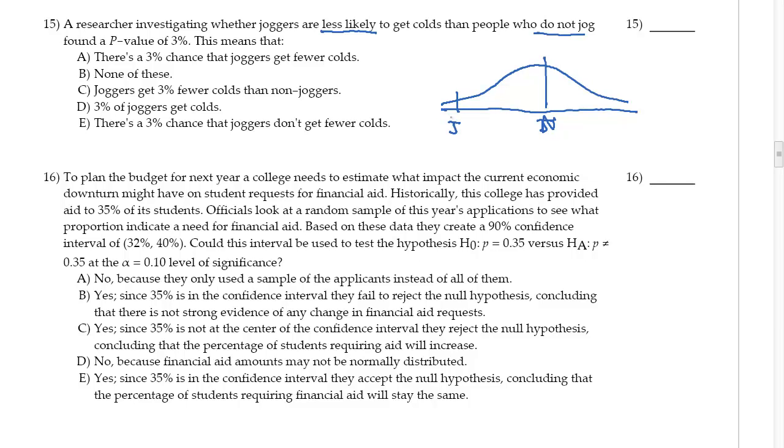Here's where my p of joggers is, or maybe non-joggers right, and here's my joggers over here, and here's my 3% in the tail. So there isn't a 3% chance that joggers will get fewer colds—it's about distance away. So none of these.